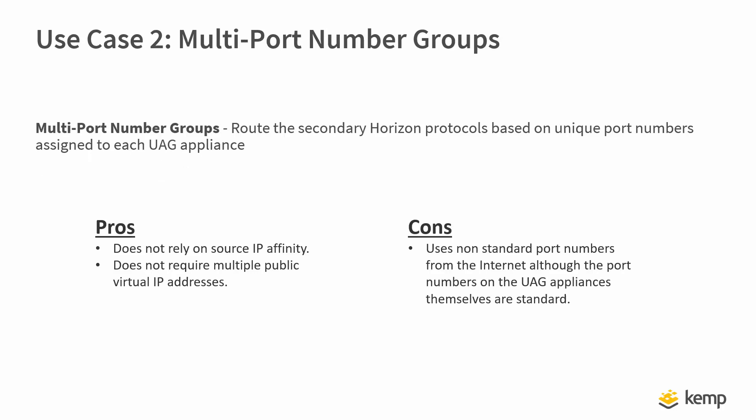Let's talk about the pros and cons of using multi-port affinity. The pros are we do not rely on source IP affinity and we do not require multiple public virtual IP addresses. The cons: it uses non-standard port numbers from the internet, although the port numbers on the UAG appliances themselves are standard.